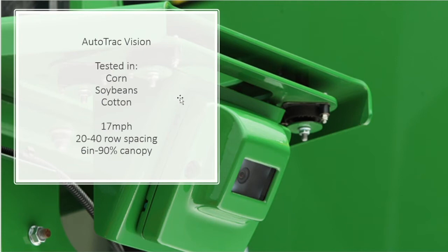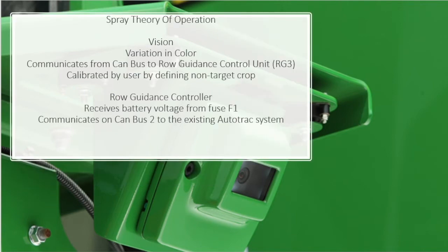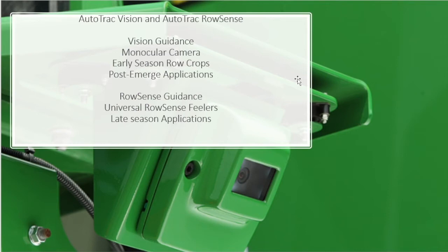AutoTrack Vision is tested in corn, soybeans, and cotton. It's rated up to 17 miles per hour, with 20 to 40-inch row spacing supported. It's most optimal to use from 6 inches to 90% canopy — kind of a full-season solution. The theory is that it detects variation in color, detecting brown ground versus green crop. It communicates via CAN bus to the row guidance controller, the RG3 controller, and is calibrated by the user defining the non-target crop. The RG3 controller receives battery voltage from fuse F1 and communicates on CAN bus 2 to the existing AutoTrack system. AutoTrack Vision has a monocular camera and is ideal for early-season row crops and post-emergent applications, whereas RowSense — which we'll talk about later — is a universal feeler wand, more of a late-season application, similar to a combine head feeler.